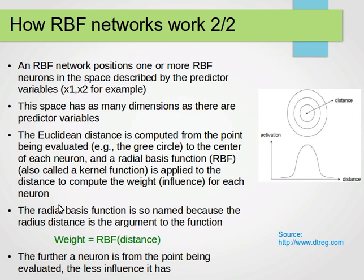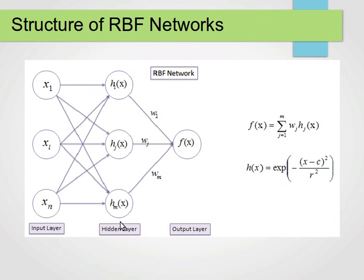The radial basis function is so named because the radius distance is the argument to the function. The further a neuron is from the point being evaluated, the less influence it has.